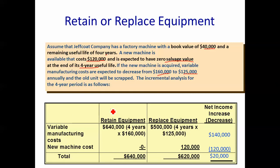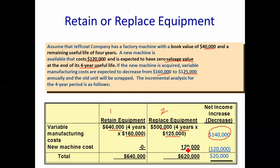Using incremental analysis, we have two alternatives: retain or replace. If I retain, it's going to cost me $160,000 a year to operate for four years — that's $640,000. If I get the new machine, it's going to cost me $125,000 a year for four years, so $500,000. The incremental difference of replacing means we're better off in cost savings by $140,000. However, we must take into consideration the cost of the new piece of equipment, which is $120,000. Taking that into consideration, you can see that the replace alternative is better.